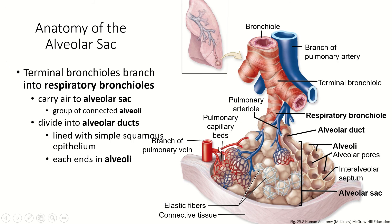Now, the alveolar sac — the terminal bronchioles branch into respiratory bronchioles. Those are these little tiny ones with just small bands of smooth muscle, and they carry the air into the alveolar sac. As they reach the alveolar sac, they branch into alveolar ducts that connect the little alveoli. Think of this like little branches and these as a bundle of grapes — these ducts branch extensively so that we have tons and tons of little alveoli.